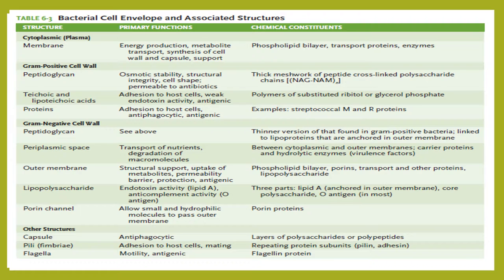Other structures of the bacteria include the capsule, which has anti-phagocytic activity and is composed of layers of polysaccharides or polypeptides. Pili or fimbriae facilitate adhesion to host cells and are used for mating. They are composed of repeating protein subunits like pilin and adhesin. Flagella are motility structures which are also antigenic and are composed of flagellin protein.